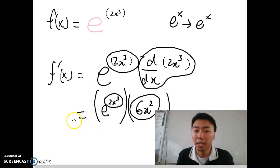And then you can get the answer which just makes it look better. And now 6x squared in the front. E 2x cubed at the back. And you're done. Thank you.